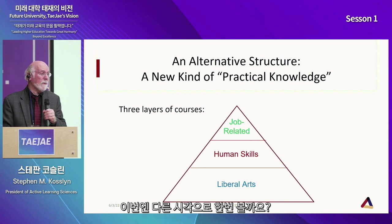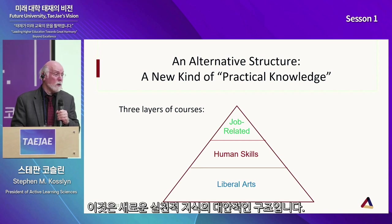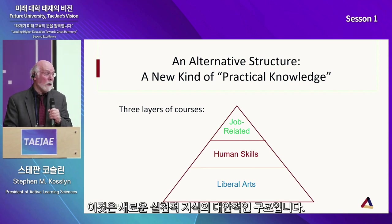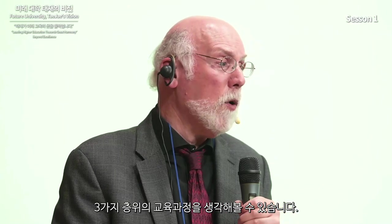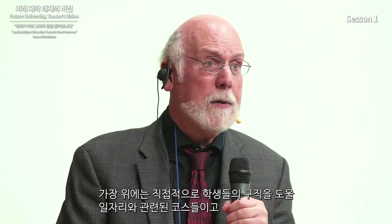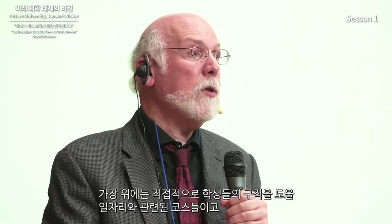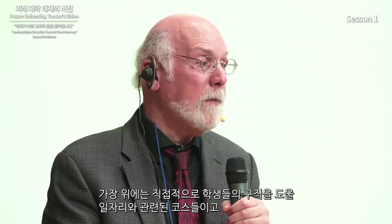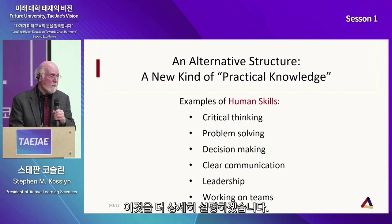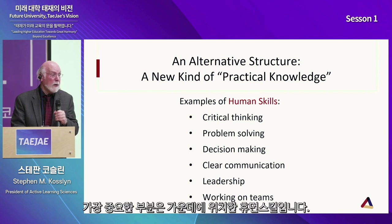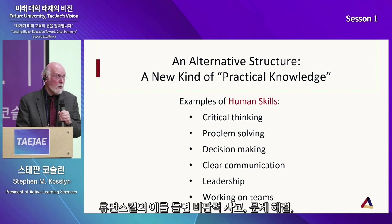Here's an alternative structure — a new kind of practical knowledge. You can think of three layers of courses. At the top are job-related courses that help students directly get a job. In the middle are what I call human skills. And at the bottom, the biggest foundation, is liberal arts. The critical part is the middle: human skills.